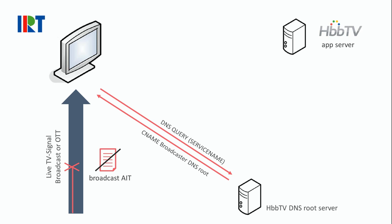It is assumed that for each country the service name is unique. If a service provides HbbTV applications, it can register with this DNS root server, and the server then delivers back to the HbbTV receiver a DNS record containing the domain of a second DNS server.